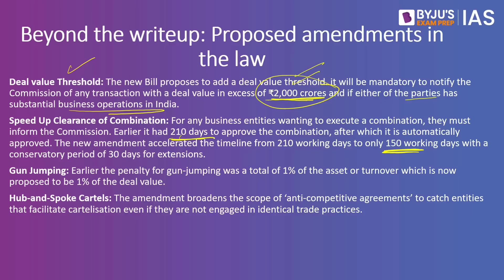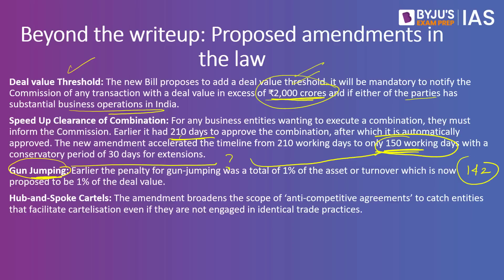If any two entities want to combine, since mergers create a high chance of monopoly, CCI permission must be obtained within 150 days. Third, there is a penalty for gun jumping — proceeding with combining two companies without CCI permission or notification. The earlier penalty was 1% of the assets or turnover of the company; now the penalty will be 1% of the deal value. So if the deal is ₹5,000 crore, then 1% of that will be the punishment.